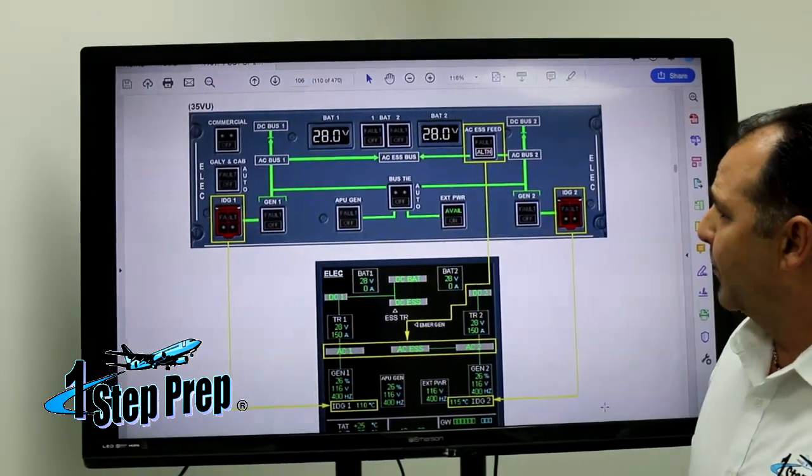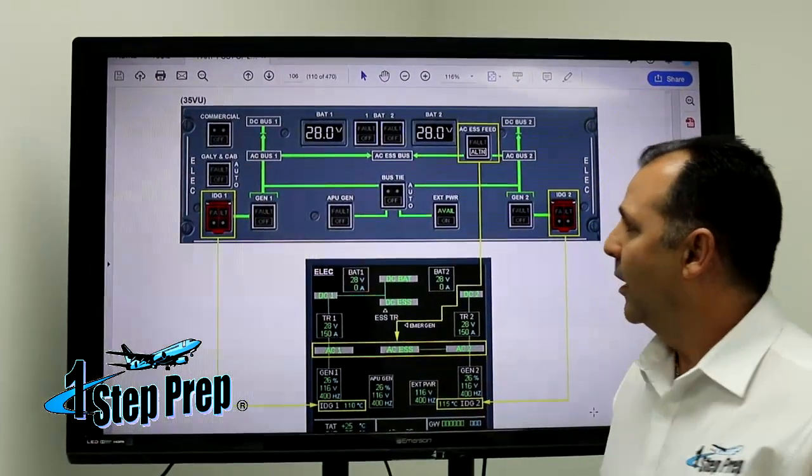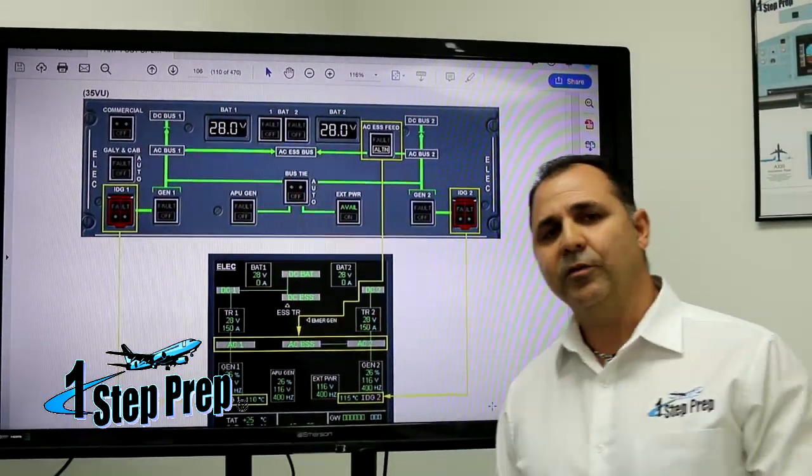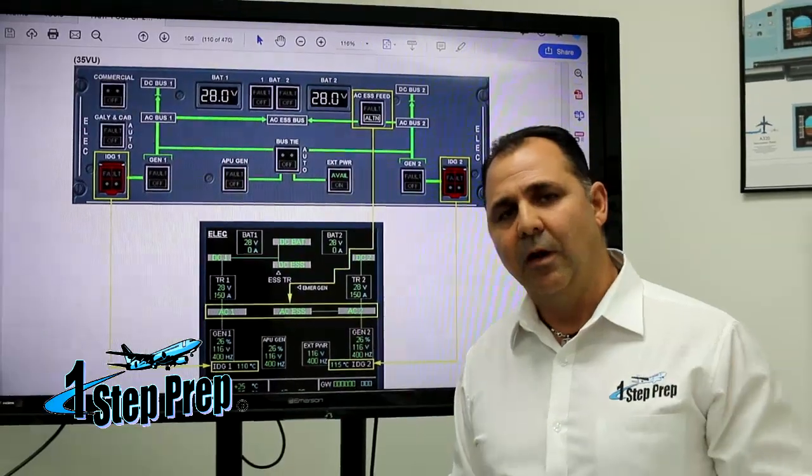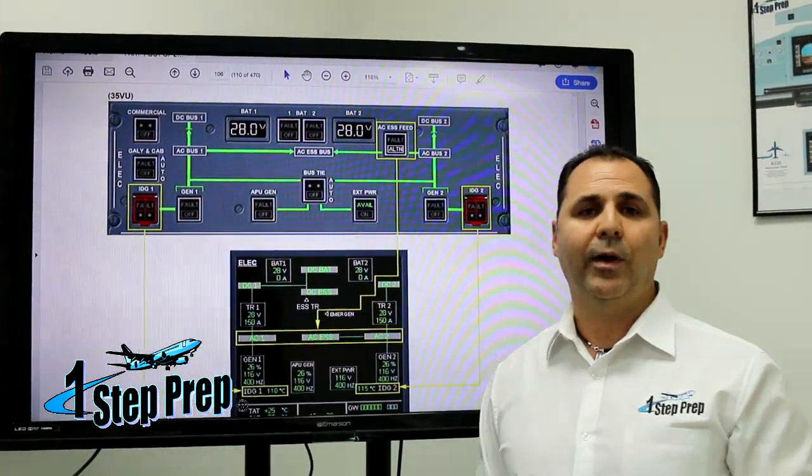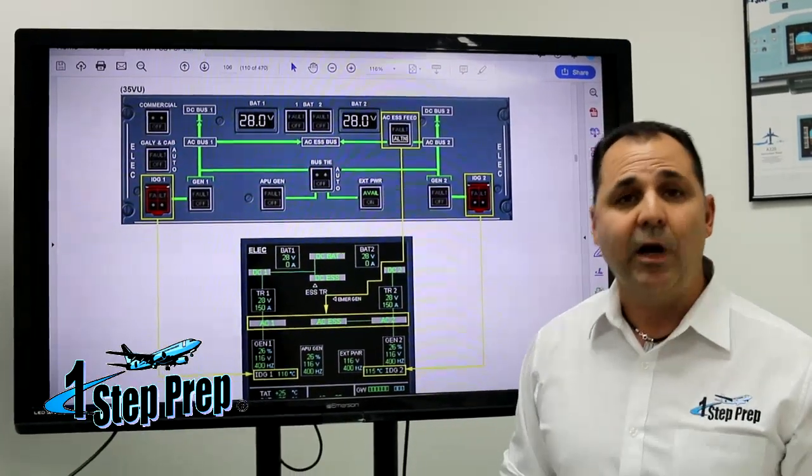This is a review about the AC Essential Bus: what is the normal power source and what is the backup power source for this special bus. If you want to go more in detail on the Airbus A320 319-320-321, visit our website onestepprep.com. We have everything you need for your initial and recurring training.